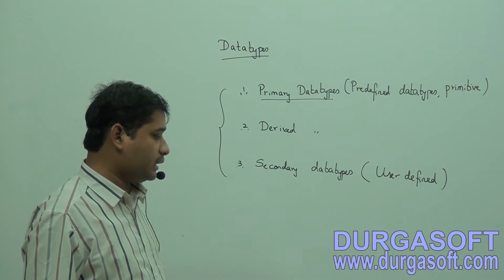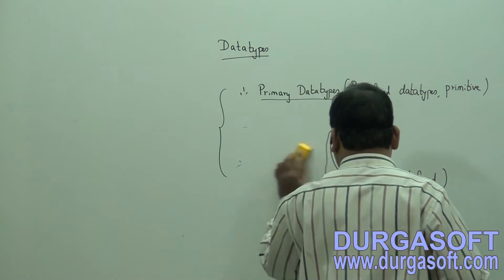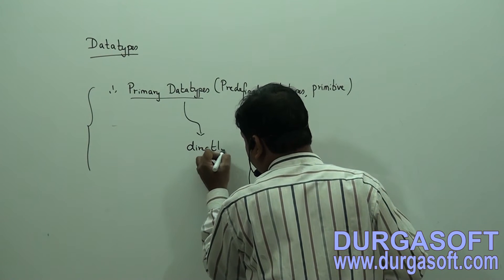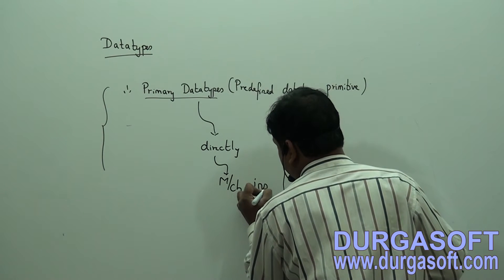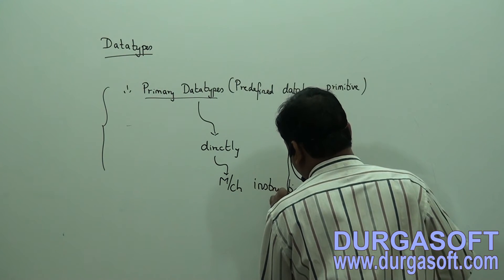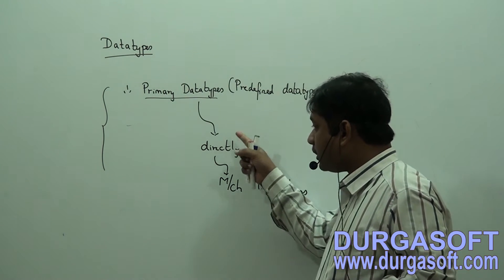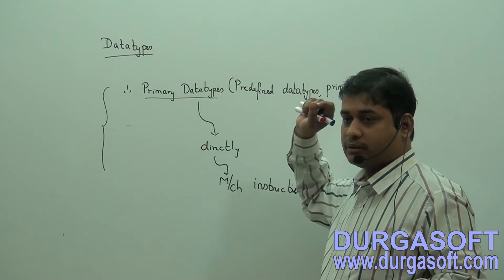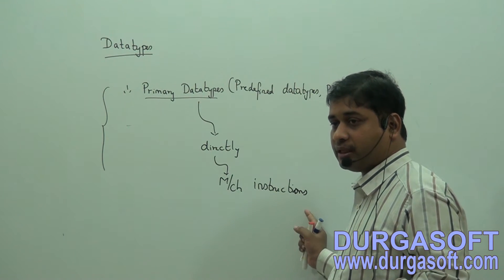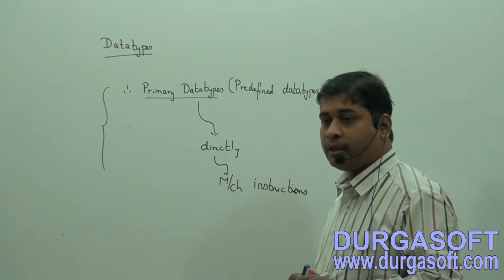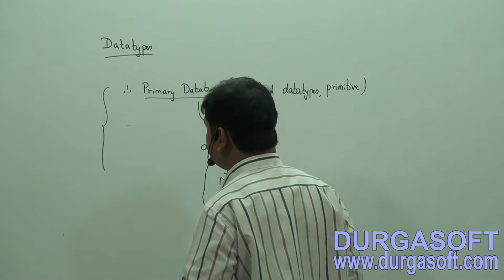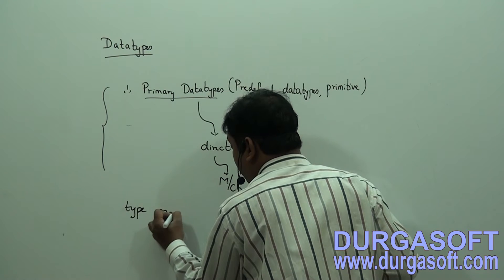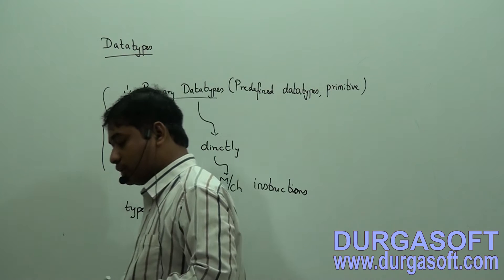Primary data types are data types that are directly interacted with the machine instructions. The type of data that directly interacts with machine instructions is called primary data types. For every primary data type, we generally define type modifiers.